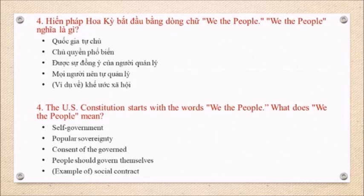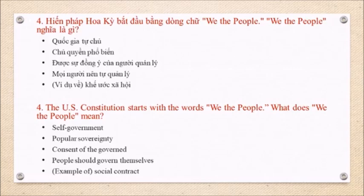Question 4: The U.S. Constitution starts with the words 'We the people.' What does 'we the people' mean? Self-government. Popular sovereignty. Consent of the governed. People should govern themselves. Example of social contract.